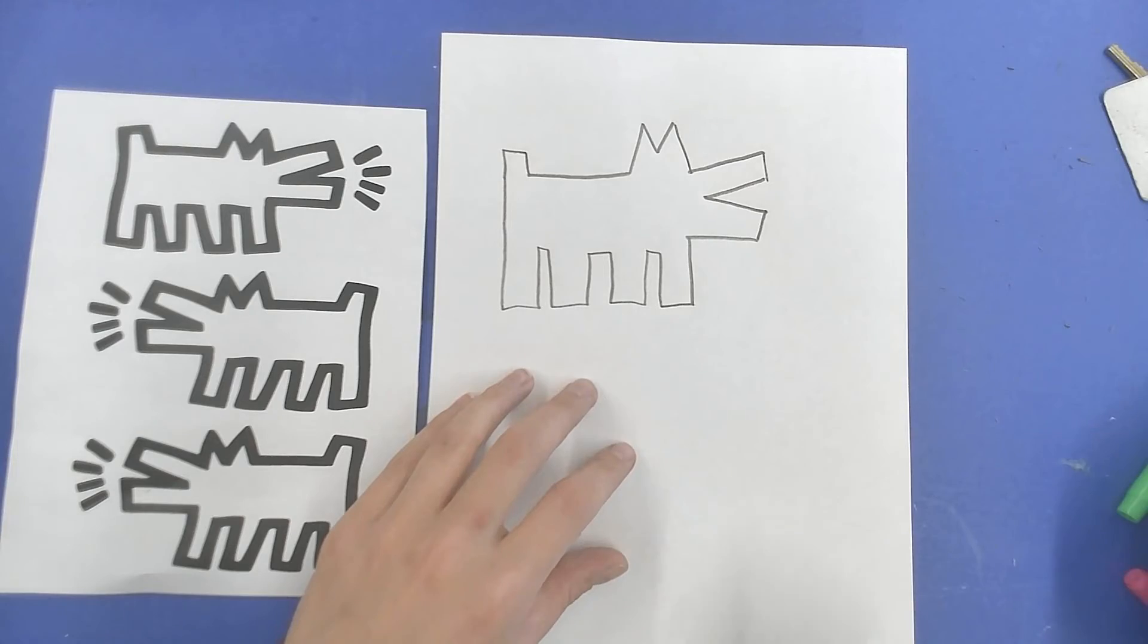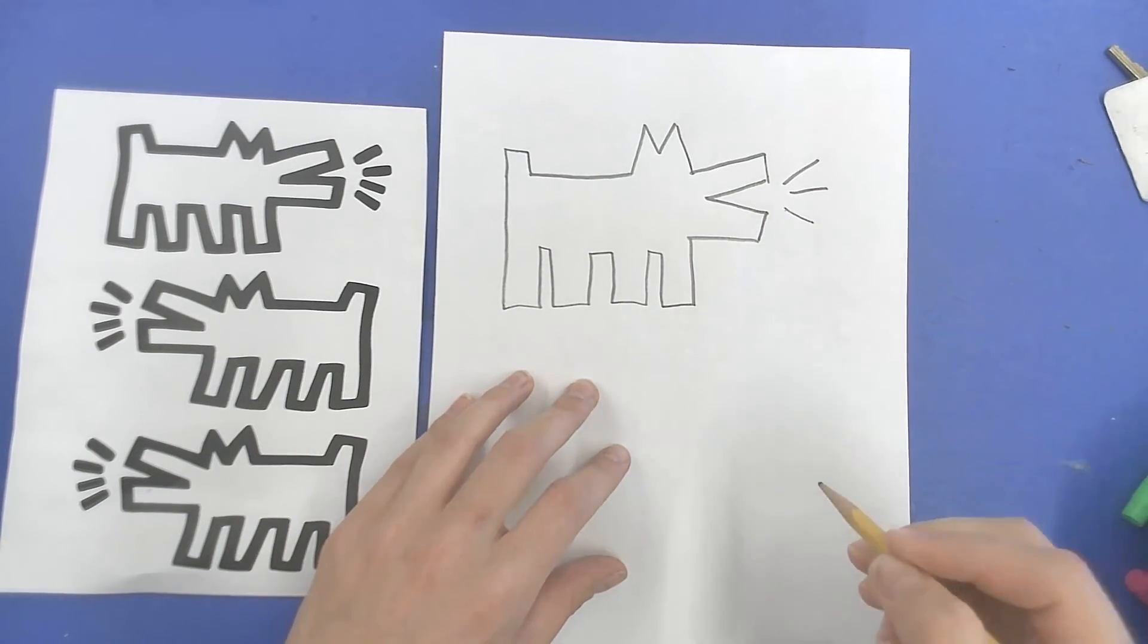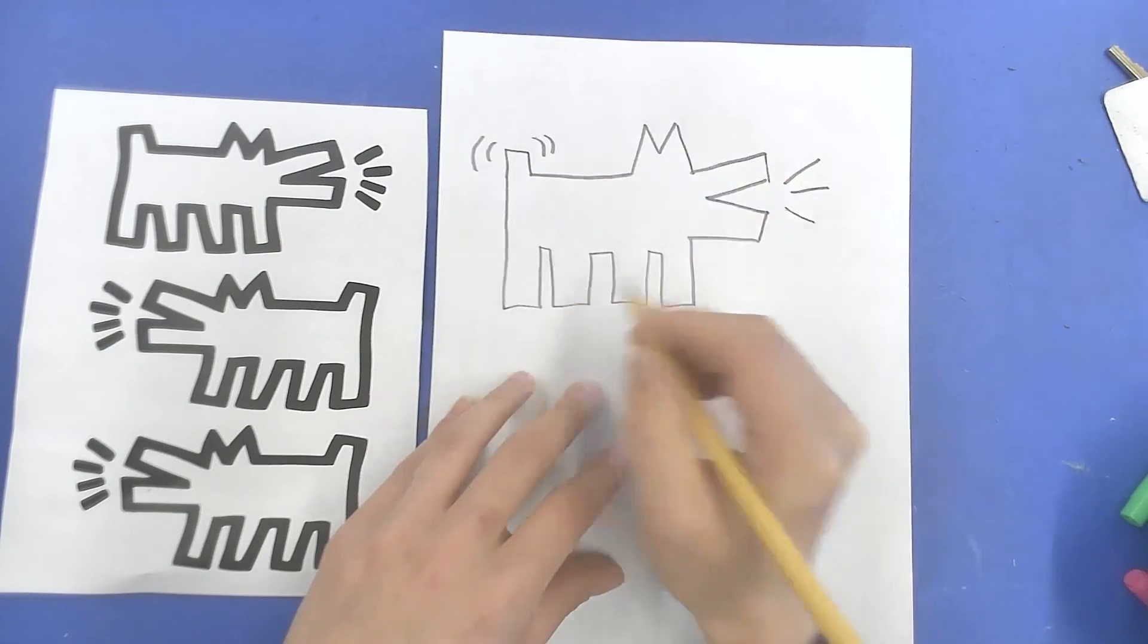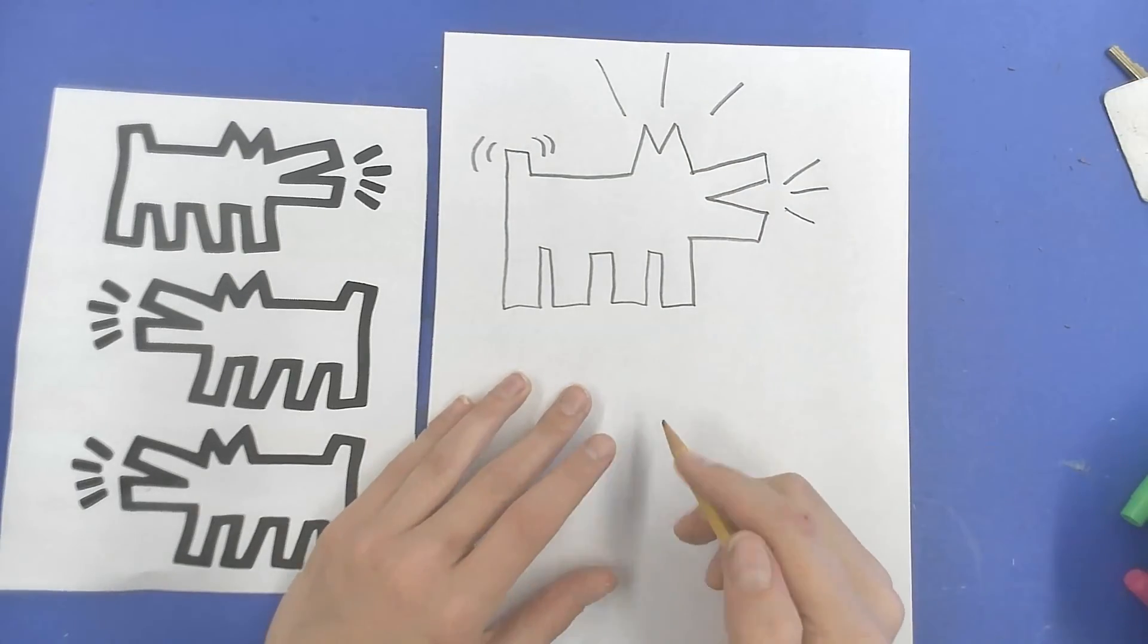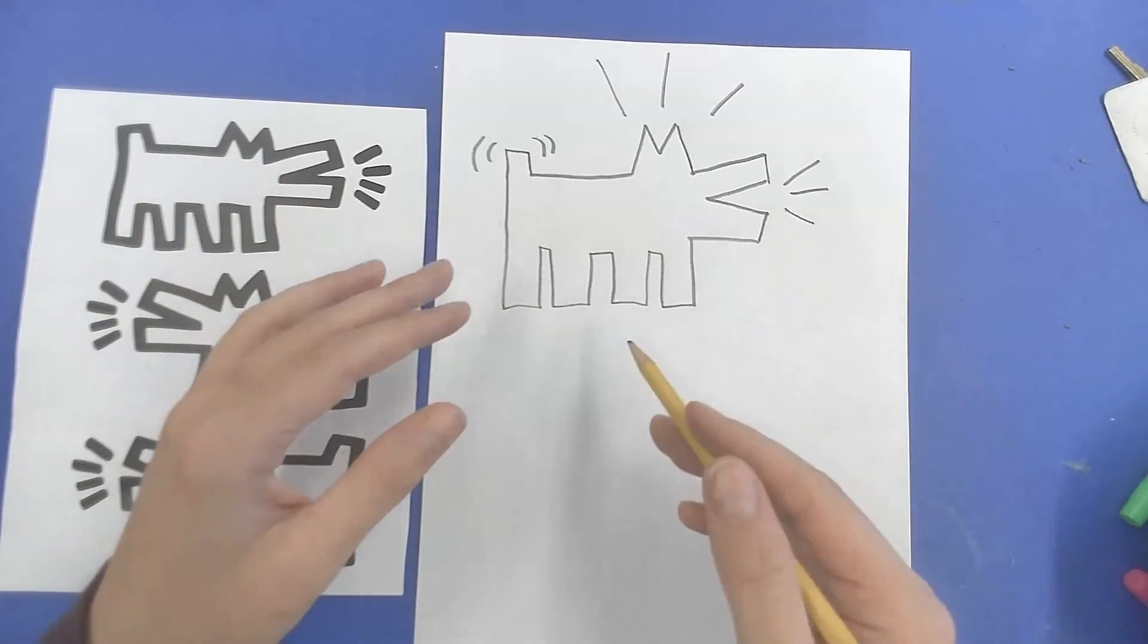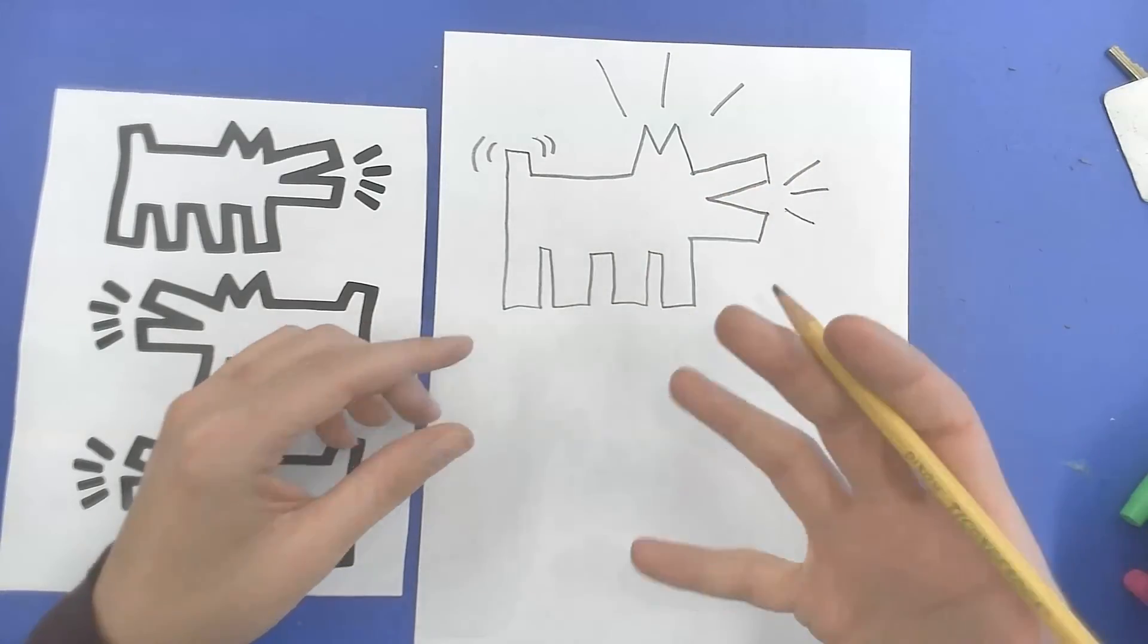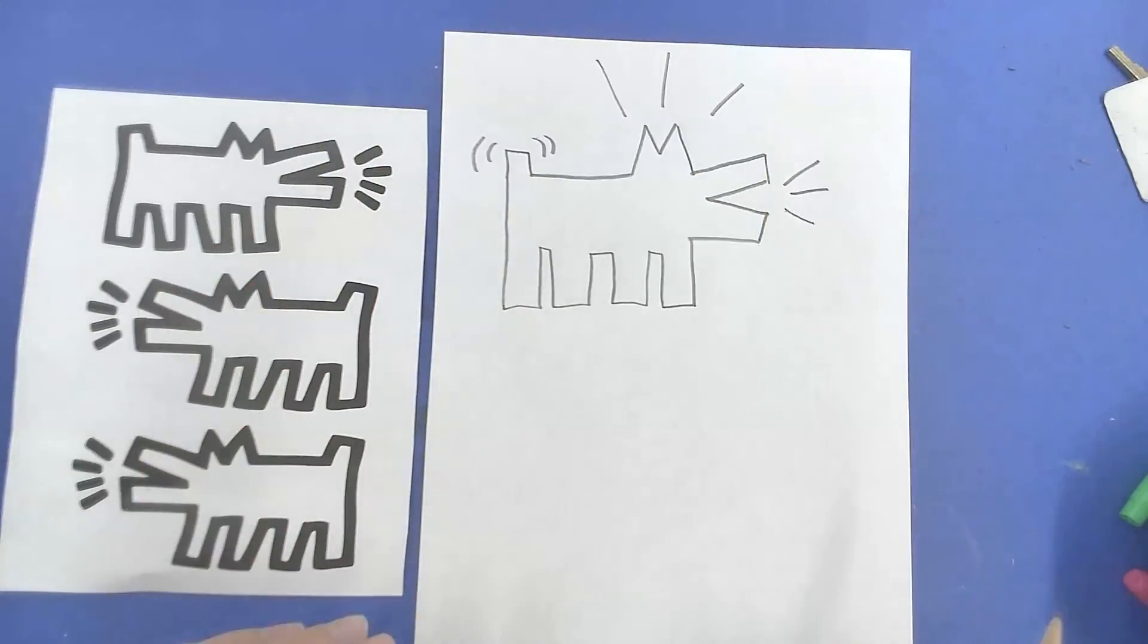And then these are called radiating lines. And they show sound or movement or excitement. And that's what's so cool about Keith Haring is that you have a feeling about this dog. You can sense how he's excited, but there is no eye on his face. There isn't a tongue. There isn't any kind of expression. We just sense it because of these lines and the position he's in.